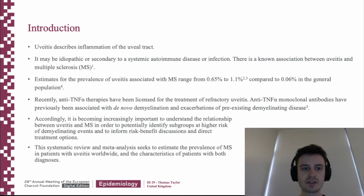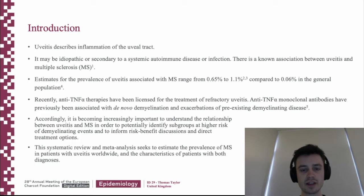Uveitis describes inflammation of the uveal tract. It may be idiopathic or secondary to a systemic autoimmune disease or infection, and there is a known association between uveitis and MS. Estimates for the prevalence of uveitis associated with MS range from 0.65 to 1.1%, compared to 0.06% in the general population.